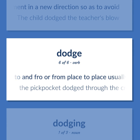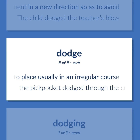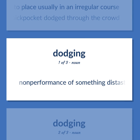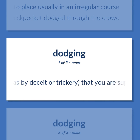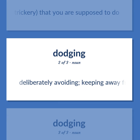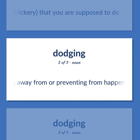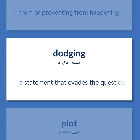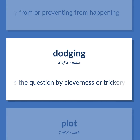Dodge: Move to and fro, or from place to place, usually in an irregular course — the pickpocket dodged through the crowd. Non-performance of something distasteful, as by deceit or trickery, that you are supposed to do. Deliberately avoiding; keeping away from or preventing from happening. A statement that evades the question by cleverness or trickery.